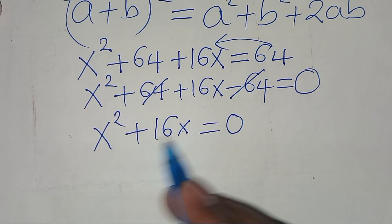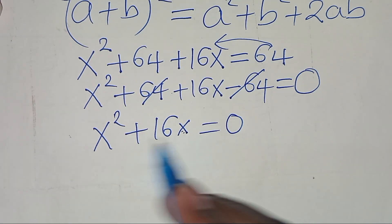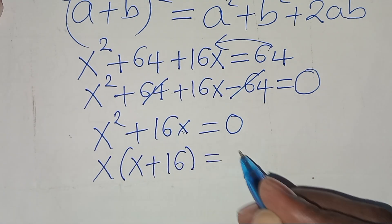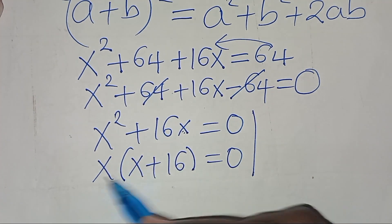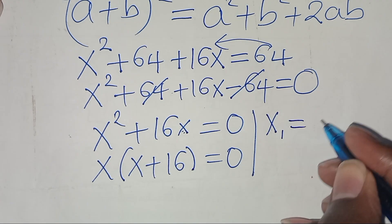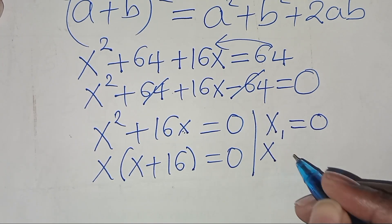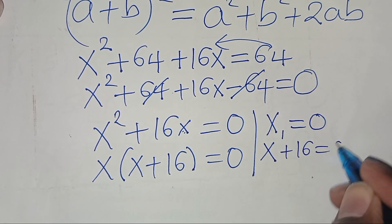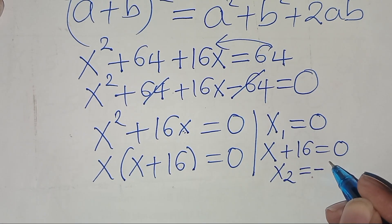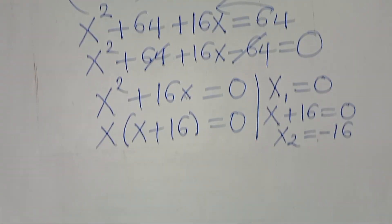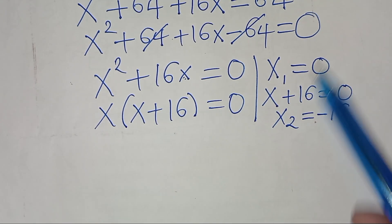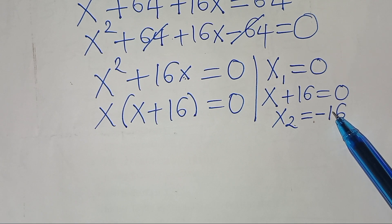Since x squared plus 16x has x as a common factor, we factor out x to get x times x plus 16, equal to 0. That means we have two possible values of x: x1 equal to 0, and from x plus 16 equal to 0, x2 is equal to negative 16. Applying both Method 1 and Method 2, the values are x1 equal to 0 and x2 equal to negative 16.